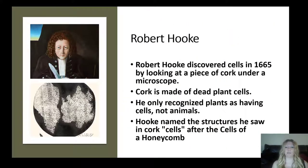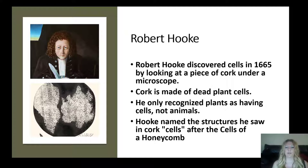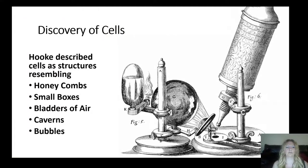Robert Hooke was the person who discovered cells in 1665 by observing a piece of cork under a microscope. Cork is made up of dead plant cells, so he was only recognizing the cell wall of the plant and did not yet understand that animals were also made of cells. Hooke named the structures cells because they reminded him of the cells of a honeycomb, also describing them as resembling small boxes, bladders of air, caverns, or bubbles.